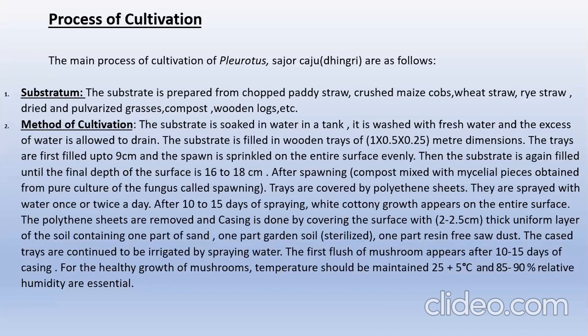Now the main process of cultivation of Pleurotus, which is called sajur kaju or dhingri, is as follows. First, substratum: the substrate is prepared from chopped paddy straw, crushed maize cobs, wheat straw, rice straw, dried and pulverized grasses, compost, wooden logs, etc. The substrate is soaked in water in a tank, washed with fresh water, and excess water is allowed to drain. The substrate is filled in wooden trays of 1 × 0.5 × 0.25 meters dimensions. The trays are first filled up to 9 cm and the spawn is sprinkled on the entire surface evenly, then the substrate is again filled until the final depth is 16 to 18 cm.